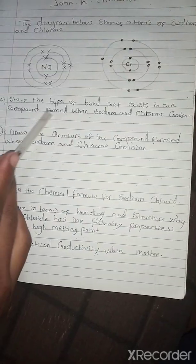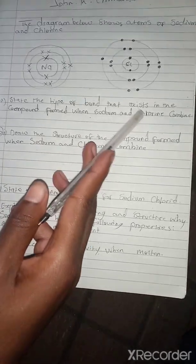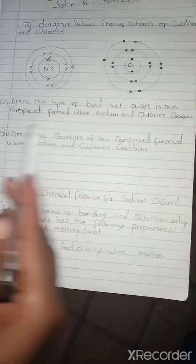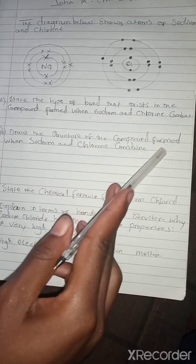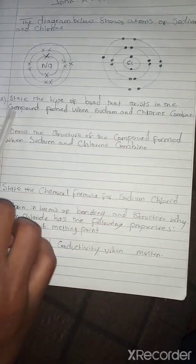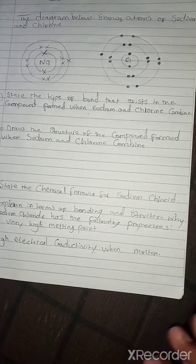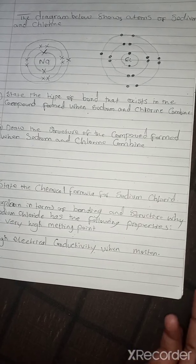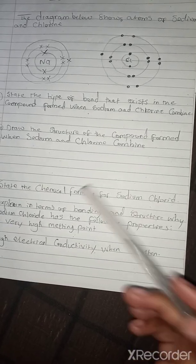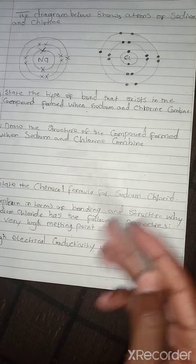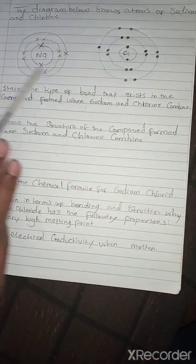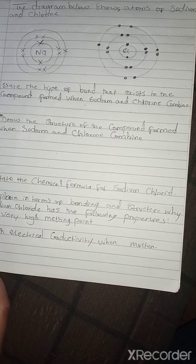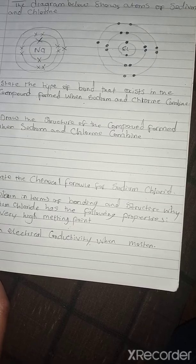Part A asks us to state the type of bond that exists in the compound formed when sodium and chlorine combine. This question comes from the topic called bonding. Bonding is the joining together of atoms to form a bond. There are two types of bonding: ionic bonding and covalent bonding.